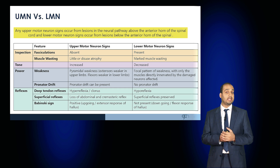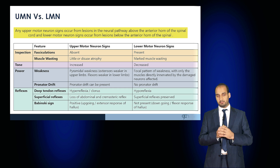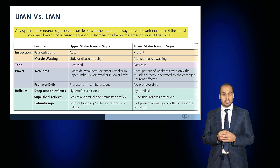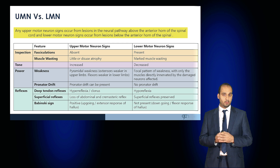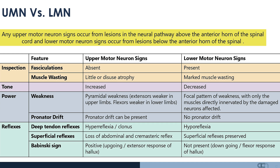Power is affected in both. In upper motor neuron conditions, the power is affected in a pyramidal weakness manner — that is, the extensors are weaker in the upper limbs and flexors are weaker in the lower limbs. In lower motor neuron conditions, there is a focal pattern of weakness with only the muscles directly innervated by the damaged nerves affected. You may note a pronator drift with upper motor neuron conditions and no pronator drift with lower motor neuron conditions.